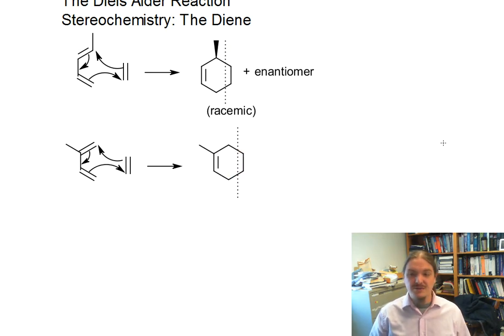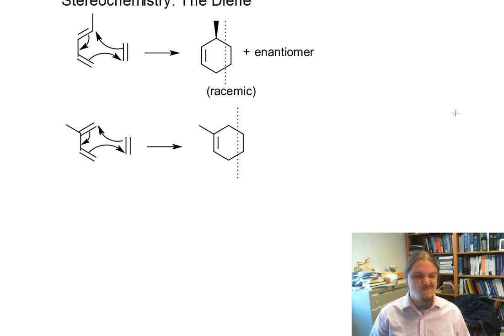And so this molecule is also achiral. Now, what about the cases I had originally up there where your dienophile has two alkyl groups on the end? Now we have the possibility of generating a product with two chirality centers. So what is that going to look like?